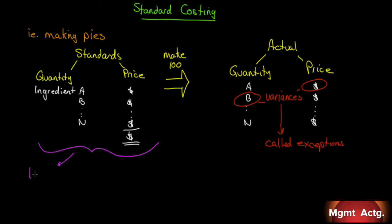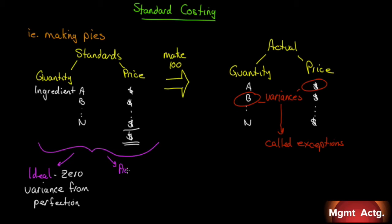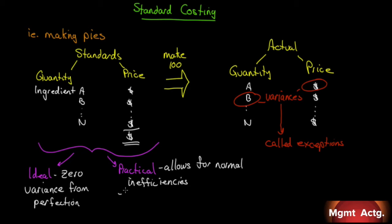Here, we break it down into quantity and price. We set standards for the amount of quantity in a unit and the price of those quantities. We can set an ideal standard, which allows for zero variance from perfection — everything goes as planned, nothing goes wrong, prices don't go up, no inflation, no wastage, spoilage, or theft. Not very practical. So we have what are called practical standards, which allow for normal inefficiencies so that abnormal inefficiencies will show up as a variance. We'll know whether it's a quantity or price variance so we know what to fix.